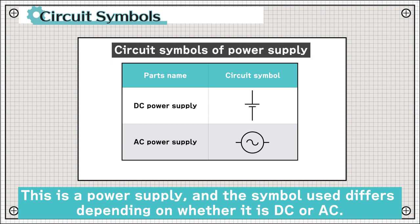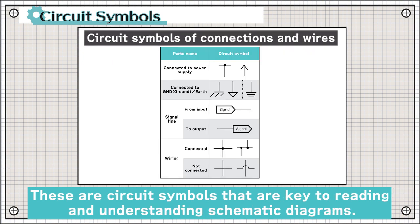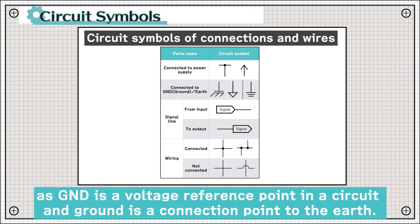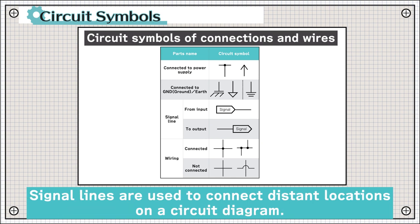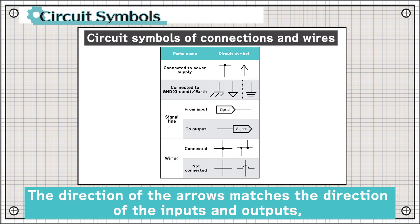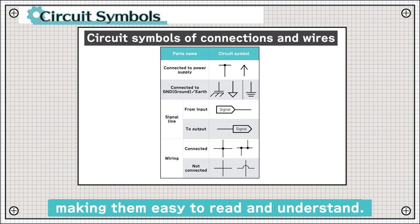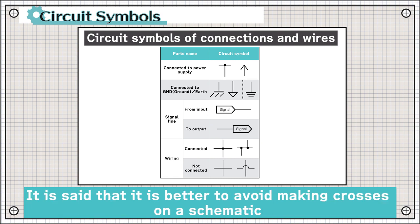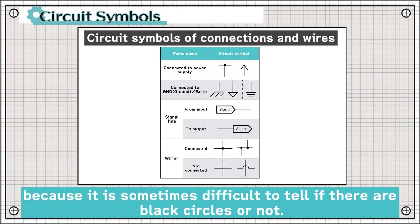This is a power supply, and the symbol used to differ depending on whether it is DC or AC. These are circuit symbols that are key to reading and understanding schematic diagrams. GND and earth are sometimes used interchangeably, but they have structurally different meanings, as GND is a voltage reference point in a circuit, and earth is a connection point to the earth. Signal lines are used to connect distance locations on a circuit diagram. The direction of the arrows matches the direction of the inputs and outputs, making them easy to read and understand. For wiring, black circles are a place where the lines are connected to each other. It is said that it is better to avoid making crosses on a schematic, because it is sometimes difficult to tell if there are black circles or not.